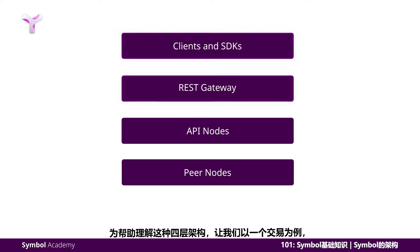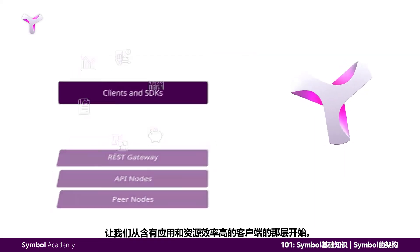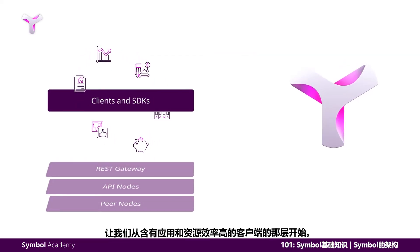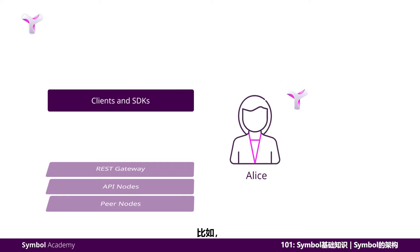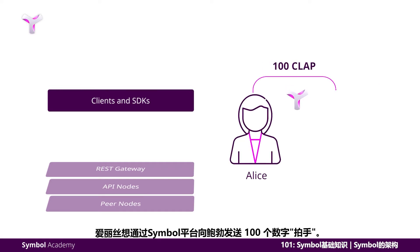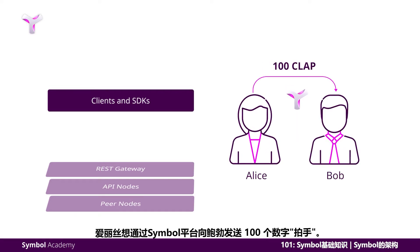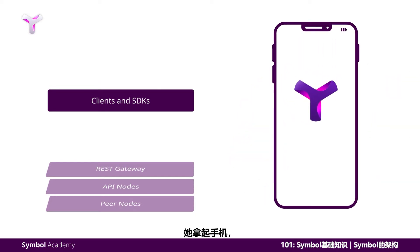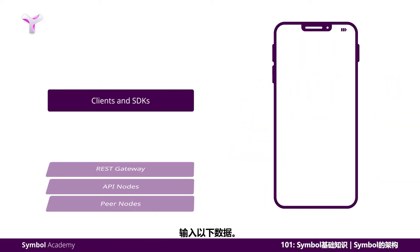To understand the four-tiered architecture, let's follow a transaction as it navigates its way through all four tiers. Let's start with the tier consisting of apps and resource-efficient clients. Let's imagine that Alice wants to send 100 digital claps to Bob over the Symbol platform. She grabs her phone and opens up a Symbol wallet app to enter the following data.